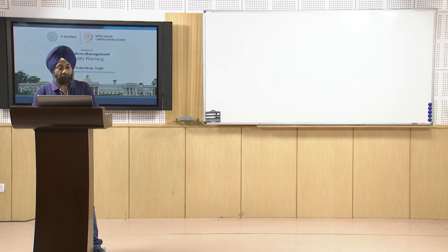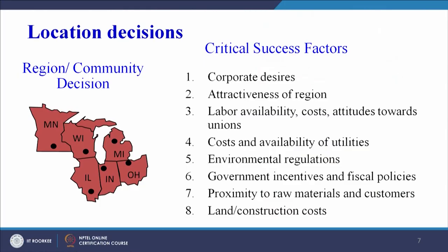Region and community decision factors include: corporate desires, attractiveness of the region, labor availability, cost of labor, attitudes towards unions, cost and availability of utilities including electricity, environmental regulations, government incentives and fiscal policies, and proximity to raw materials and customers.